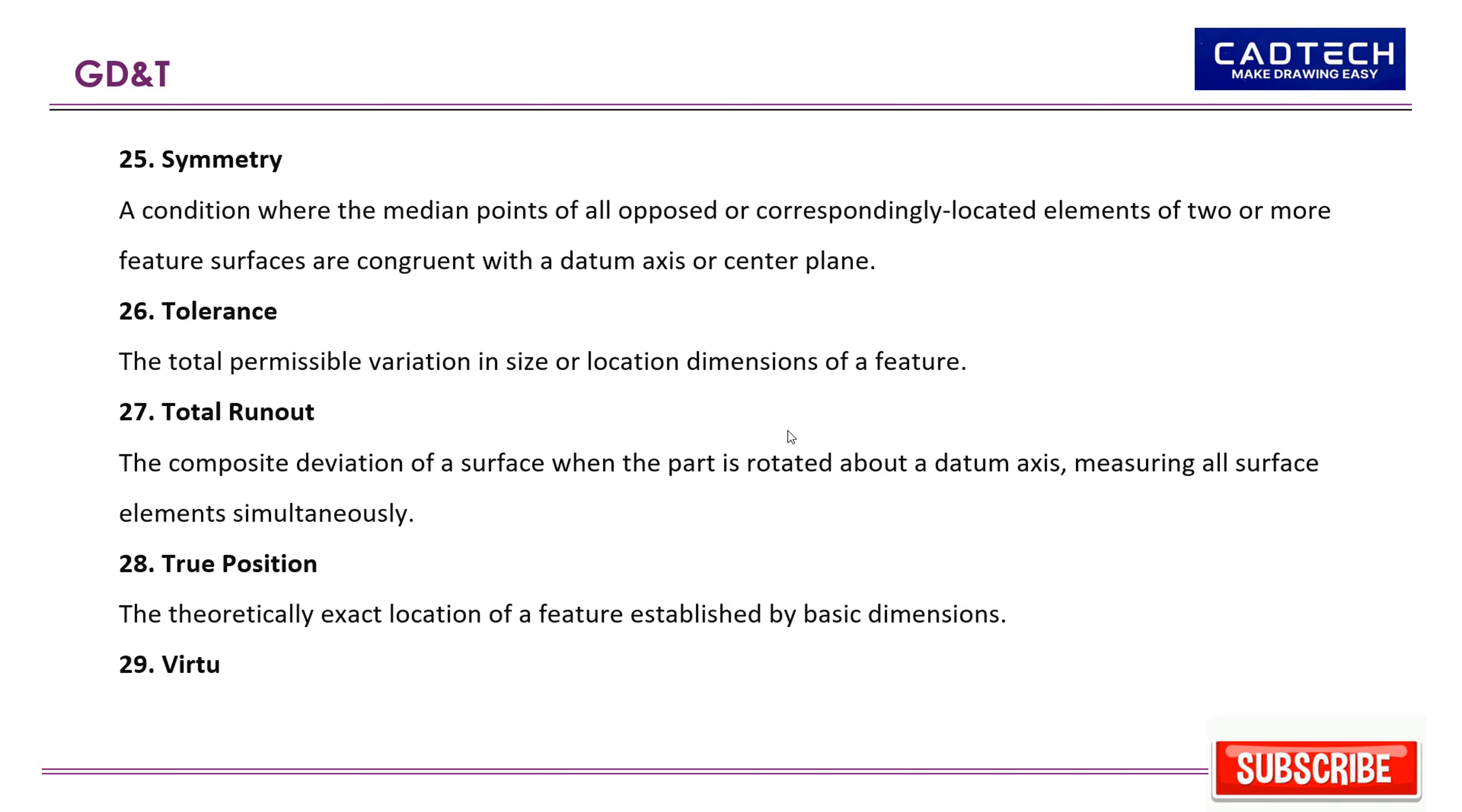29. Virtual condition: A boundary generated by the collective effects of a feature's size and geometric tolerance. 30. Circular runout: A condition where all points of a feature are controlled in a radial direction as the part is rotated 360 degrees about a datum axis.